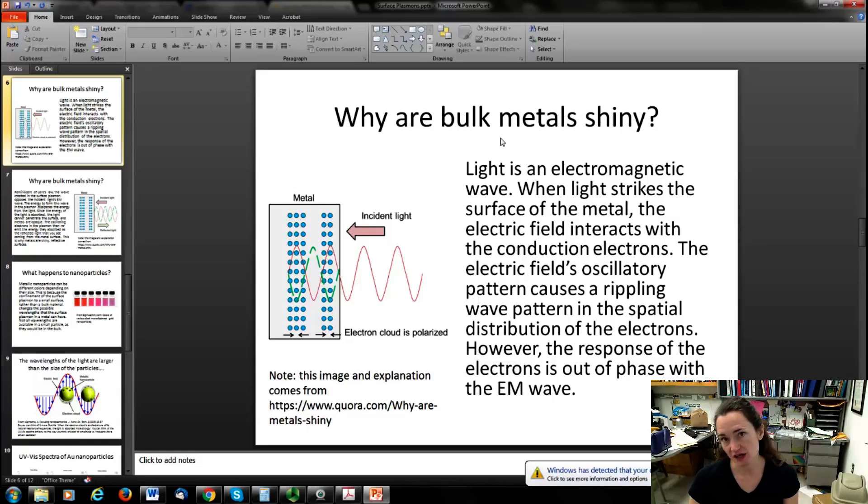Well, the answer comes in a combination of this plasmon effect that we see for the free electron gas in a metal, which occurs in the surface, along with how light interacts with that free electron gas. So light is an electromagnetic wave. It's an oscillating electric field with a perpendicular magnetic field, and the strength of the electric field varies in time. Now, when the light actually strikes the surface of a metal, that oscillating electric field is going to interact with the conduction electrons that make up the free electron gas. The electric field's oscillatory pattern actually causes a rippling wave pattern in the spatial distribution of the electrons that make up the gas. So you can see here in this little cartoon at the right, you see the electric field coming in, and that's supposed to be the incident light, which is depicted here in red. And then what that does is that oscillating electric field causes the electrons to move around into a specific pattern or arrangement spatially on the surface.